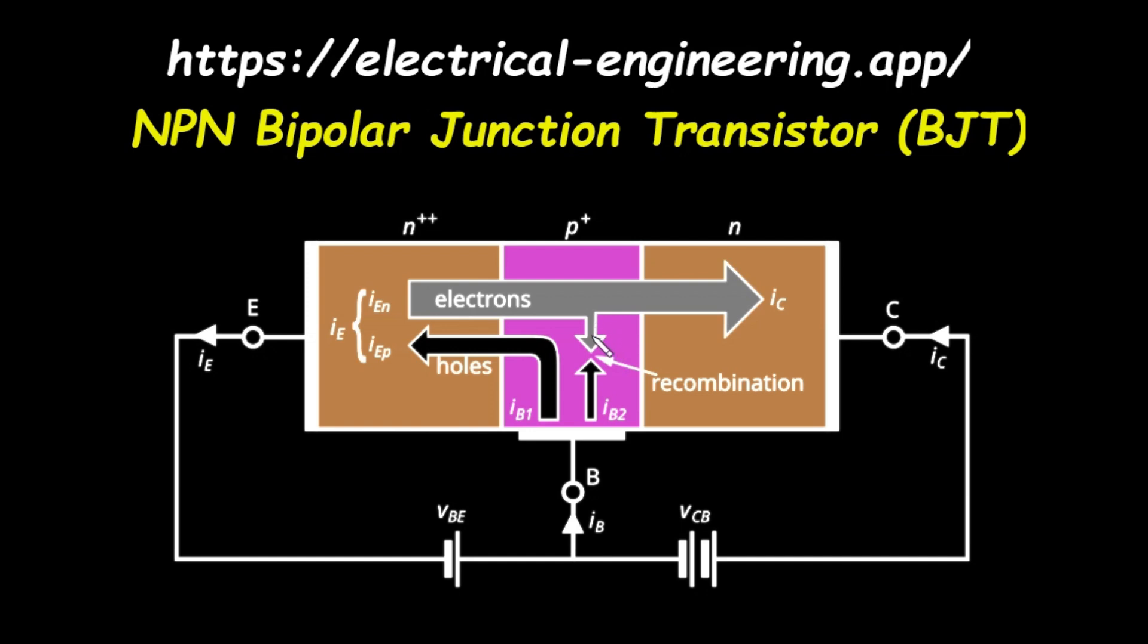The second, less common fate, is that an electron might encounter a hole and recombine. When this happens, the free electron fills the hole, and both charge carriers are eliminated. This event is labeled recombination in our diagram.